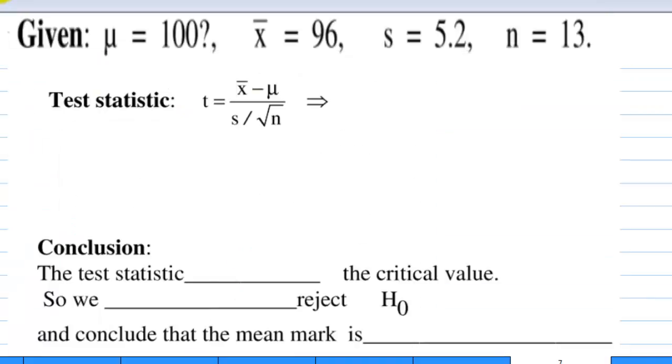To calculate the test statistic, which is t, equals x bar minus mu over s over square root of n, which is 96 minus 100 over 5.2 over square root of 13. This is equal to negative 2.77.